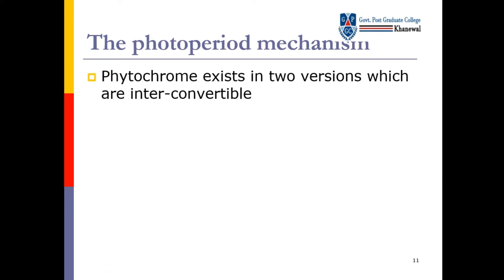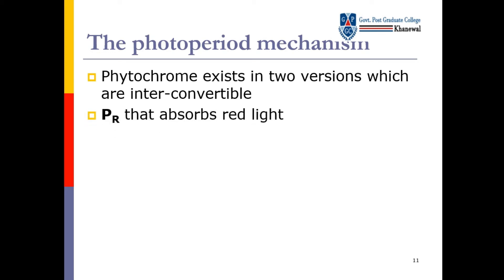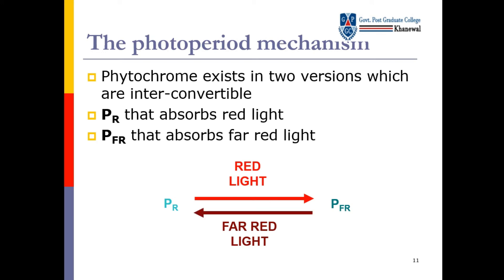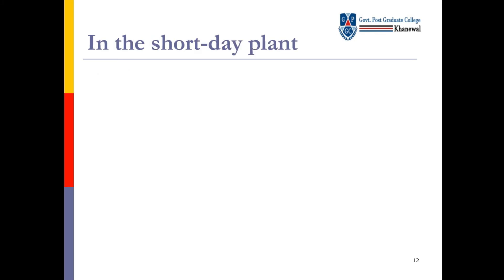The photoperiod mechanism: phytochrome exists in two versions which are interconvertible. PR absorbs red light — جس کو ہم PR بھی بولتے ہیں، یہ red light کو absorb کرتے ہیں. Phytochrome PFR — یہ far red light کو absorb کرتے ہیں. PR red light absorb کرے گا تو یہ PFR میں change ہو جائے گا، اور اگر PFR far red light absorb کرے گا تو یہ PR میں change ہو جائے گا.